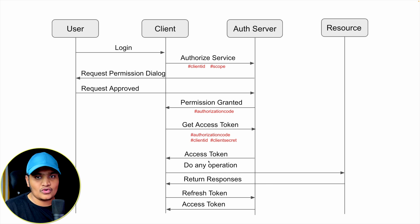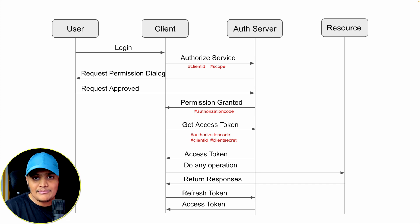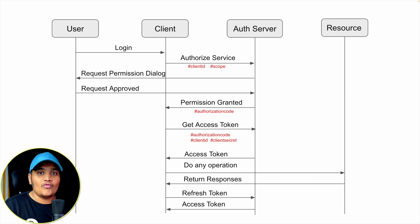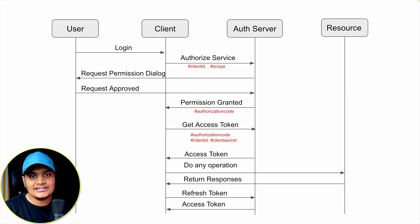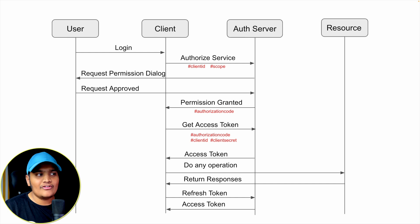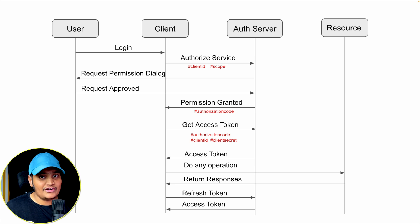This access token also has an expiry date. Suppose you want the token to expire every five minutes — you can set the expiry time and after five minutes that token will expire. Once the token is expiring, there is a way to refresh the token and get a new one. That refreshed token is then passed again to fetch the resources. This is how the entire OAuth flow works, where you won't be asked for your credentials — everything will be validated against your OAuth server, which you can create yourself or use a third-party server.